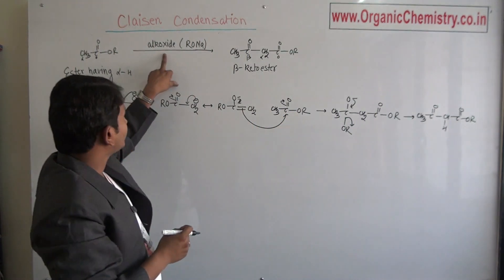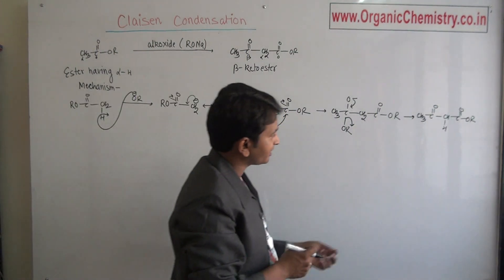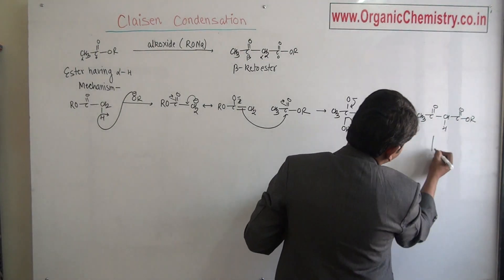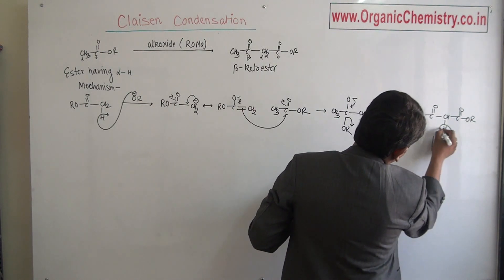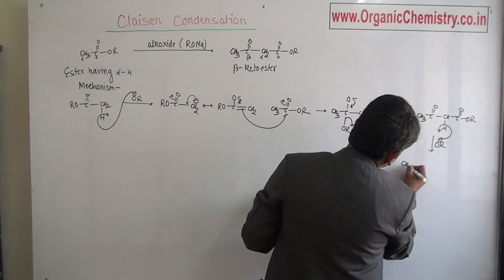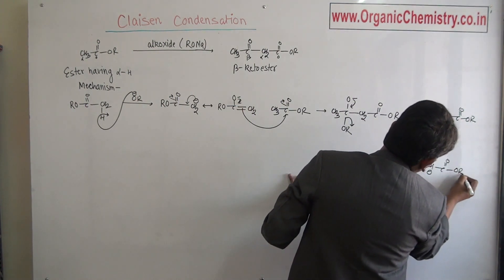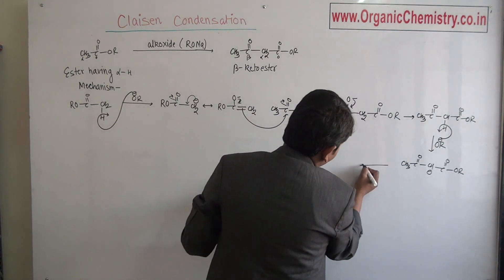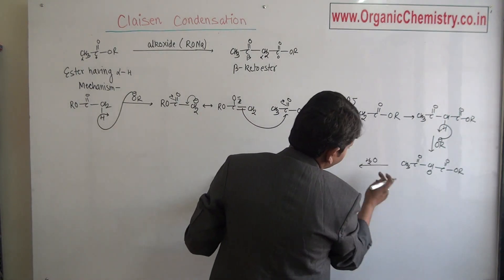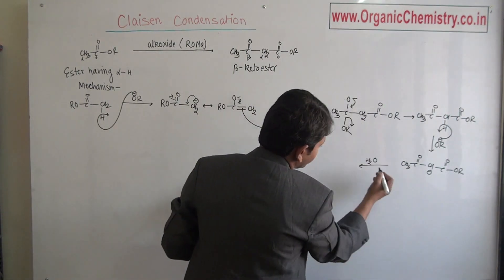This particular alkoxide is a good base. We can also extract this hydrogen and make salt of this compound. But we assume that water is added after the reaction.